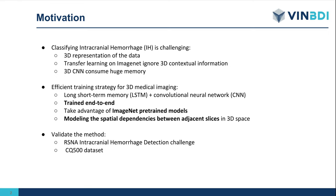Classifying intracranial hemorrhage is a challenging task. The main difficulty of dealing with 3D imaging is the 3D representation of the data. A naive approach to this problem is to ignore the 3D contextual information and treat every image independently. An alternative approach is to utilize 3D convolutions to learn directly from voxels, but this method costs a large amount of memory.